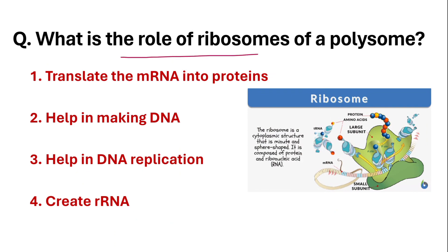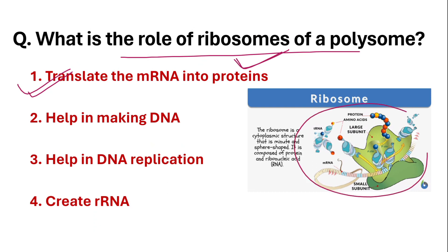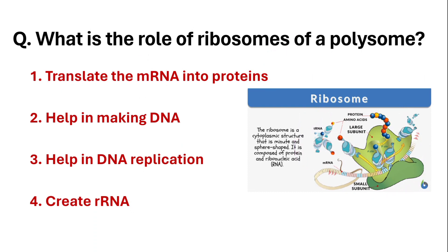What is the role of ribosomes in a polysome? The role of ribosomes in a polysome is to translate the mRNA into proteins. The ribosome structure helps to translate mRNA into proteins.